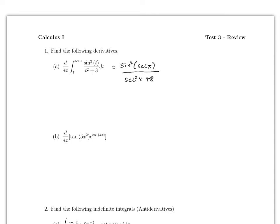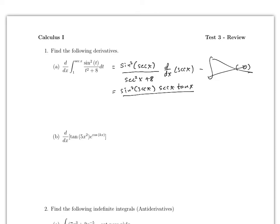Then times the derivative with respect to x of secant — which is what? Then minus — since you're going to multiply it times 0, this is not going to be here. So what's the derivative of secant? Secant x tangent x, right? And all of this divided by secant squared x plus a. That's it.